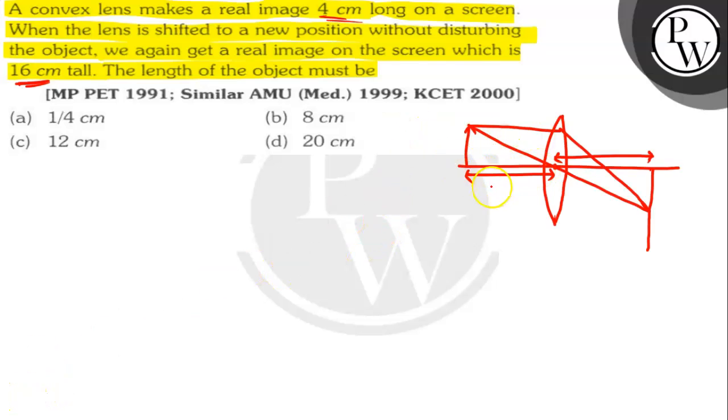This is the diagram. This distance we can take is u and this distance we can take v. The formula of the magnification is given by m equals h2 by h1, where m is the magnification, h1 is the object height, and h2 is the image height.